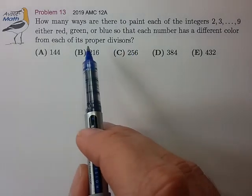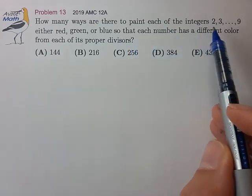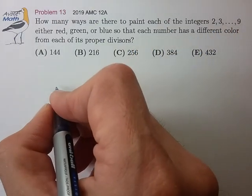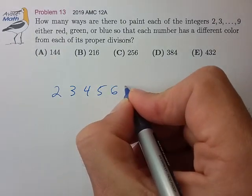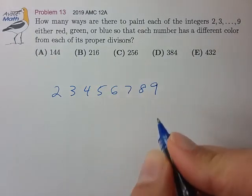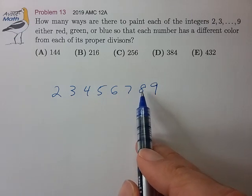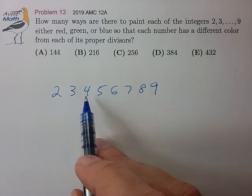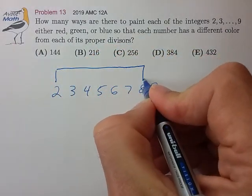Okay, so a proper divisor is a divisor not equal to 1. Let's list out our numbers and see how they're all connected. Now 2, 4, and 8 kind of jump out to me because they all share proper divisors with each other, so those are quite connected.